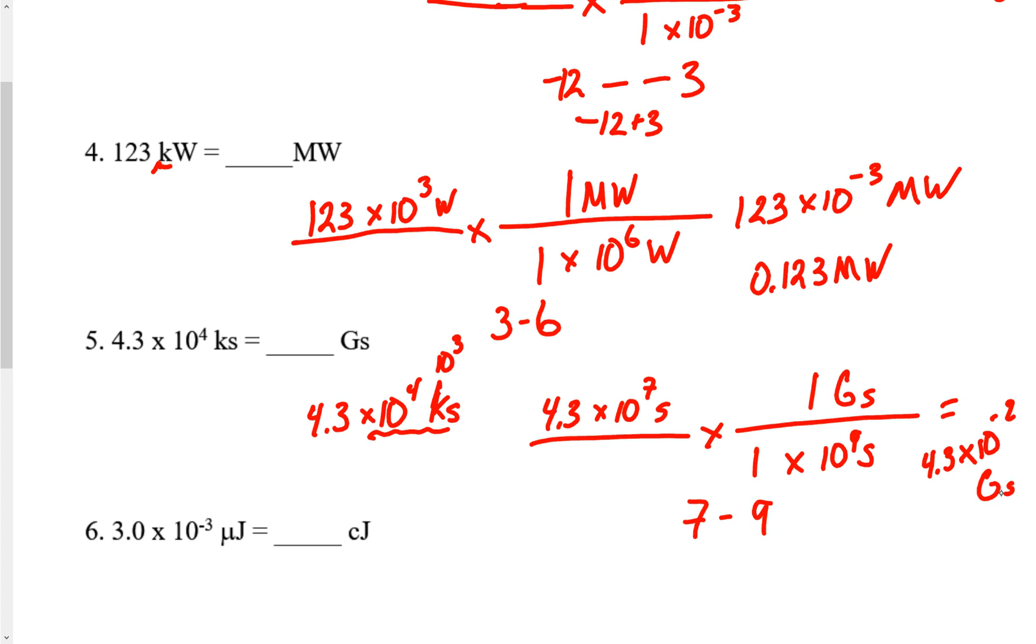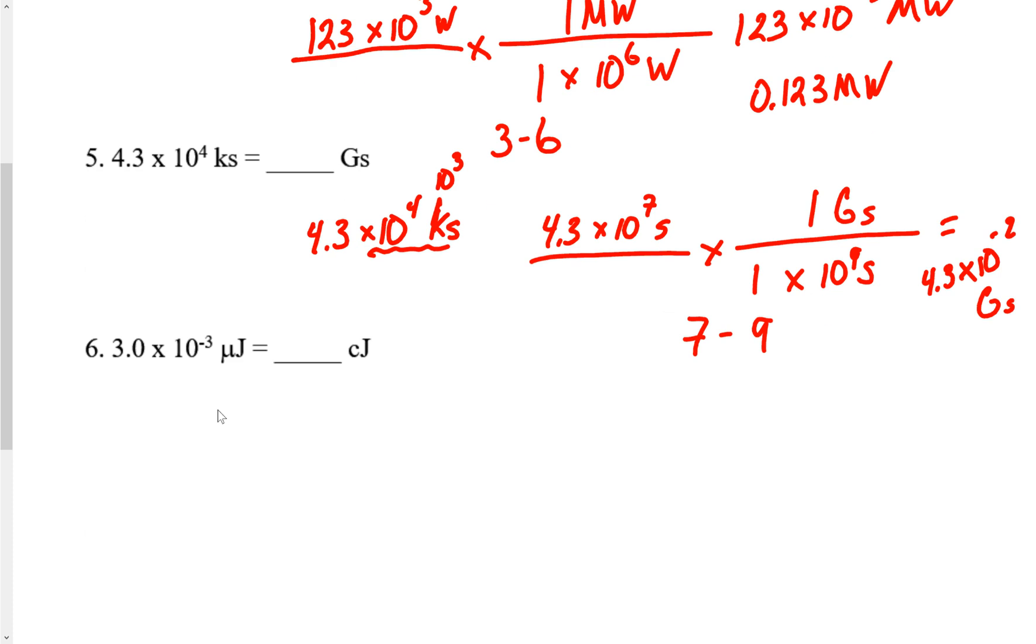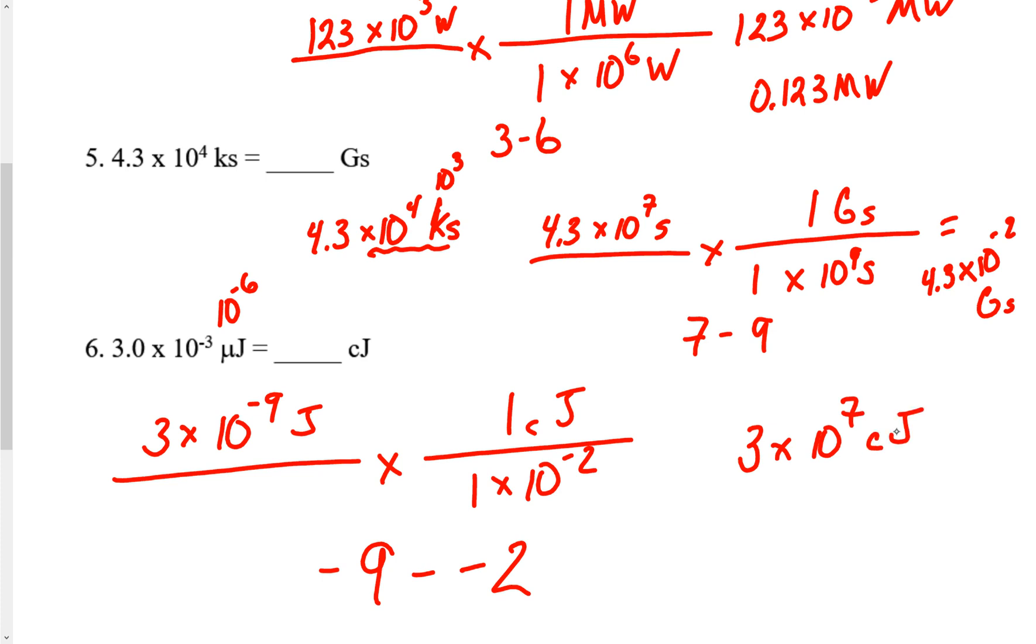This same one, we've got another exponent. Micro is 10 to the negative 6. So you'd write down 3.0 times 10 to the negative 9 joules. You're trying to convert to centijoules. Centi means 1 times 10 to the negative 2. Negative 9 minus negative 2, so this is actually 3.0 times 10 to the negative 7 centijoules. That would be our answer.